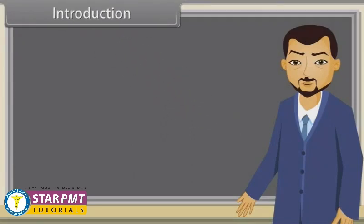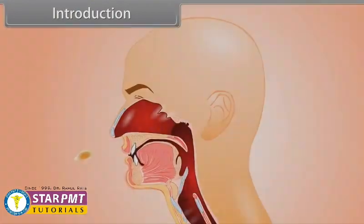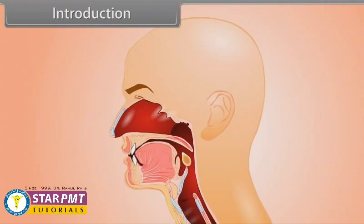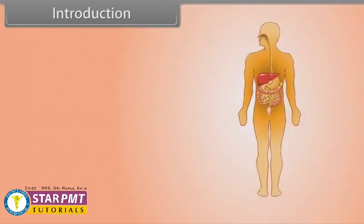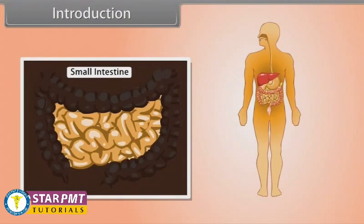Hey kids, we all know that we need energy to live and food is the primary source of energy. But the process of digestion of food starts from the mouth and the action of absorption of energy majorly starts in the small intestine.